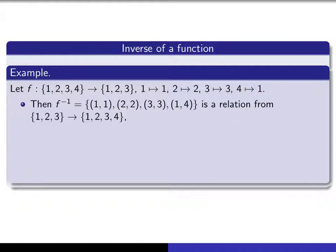Then f inverse is obtained by reversing all of those ordered pairs, giving a relation from this set to this set. But it isn't a function. Do you see what goes wrong? Why is it not a function?